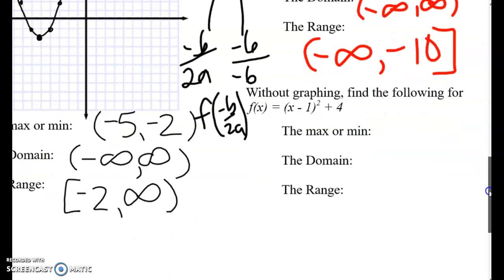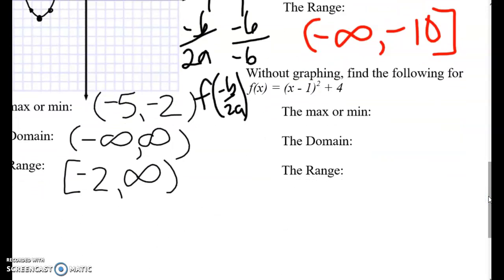All right, one last one. But look at this. It's in vertex form, which is beautiful. So I've got, what's your vertex? 1, 4. Good work. And then see in the front, there's nothing there, which really means there's a 1. So is it opening up or down? Up. Got it.